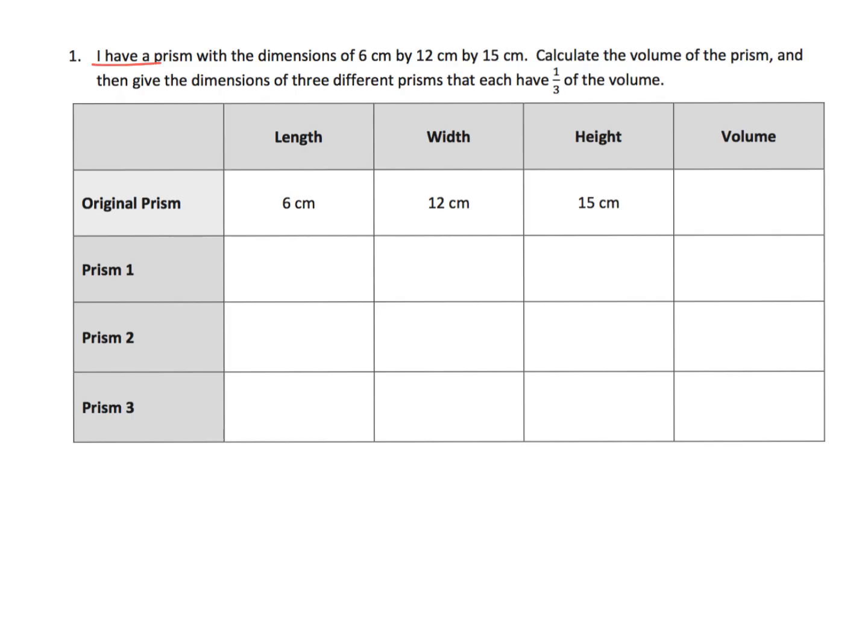So it says, I have a prism with dimensions of this and calculate the volume of the prism and then give the dimensions of three different prisms that each have a third of the volume. Okay, so the first thing we need to do is we need to figure out the volume of that original prism.